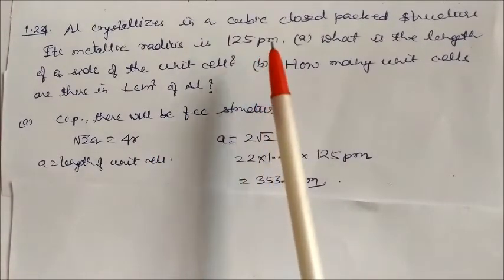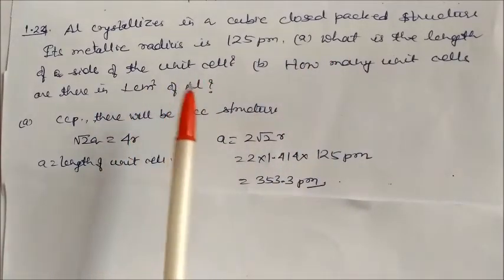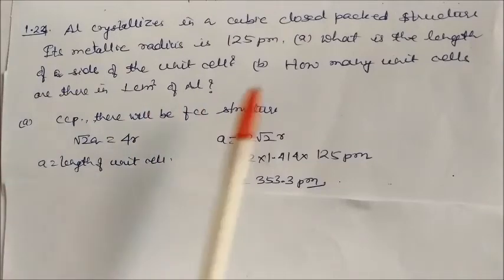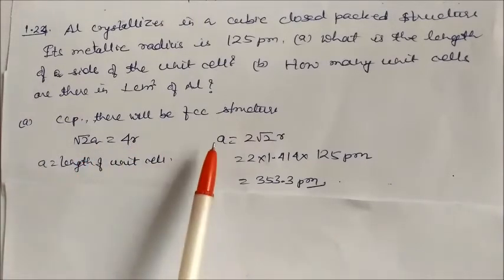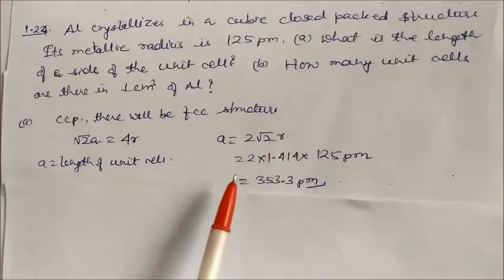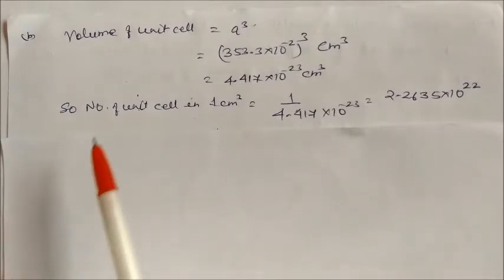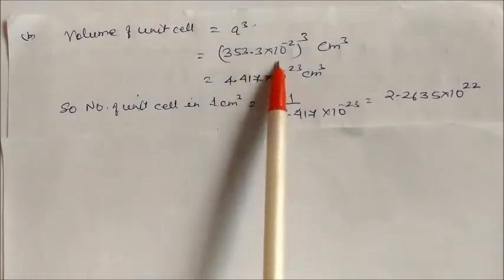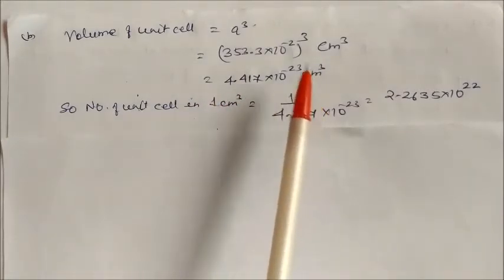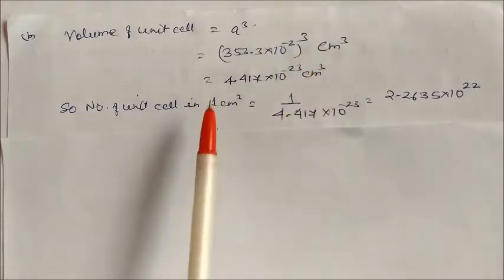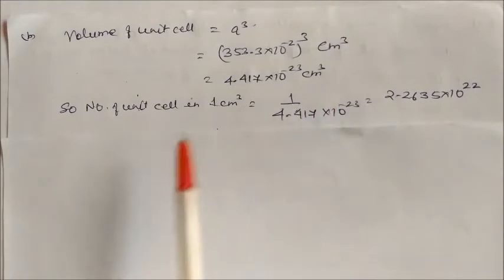Aluminium crystallizes in a cubic close-packed (FCC) structure with metallic radius 125 pm. Using √2 × a = 4r, we get a = 2√2 × r = 2√2 × 125 pm = 353.5 pm. For the second part, the volume of the unit cell is a³ = (3.535 × 10⁻² cm)³. Dividing 1 cm³ by this volume gives approximately 2.2635 × 10²³ unit cells in 1 cm³ of aluminium.